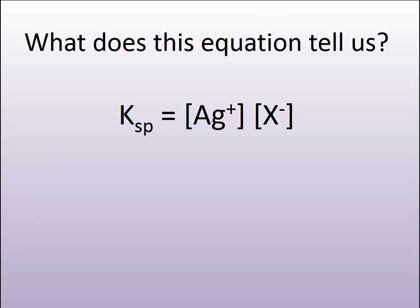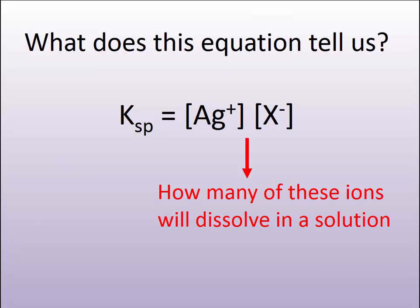Ksp tells you how much. So Ksp is equal to, Ksp tells you how much ion, silver and halide ion, you can have dissolved in a solution. Or said in a math way now, the product of the concentrations of the soluble ions will be the value of the Ksp.